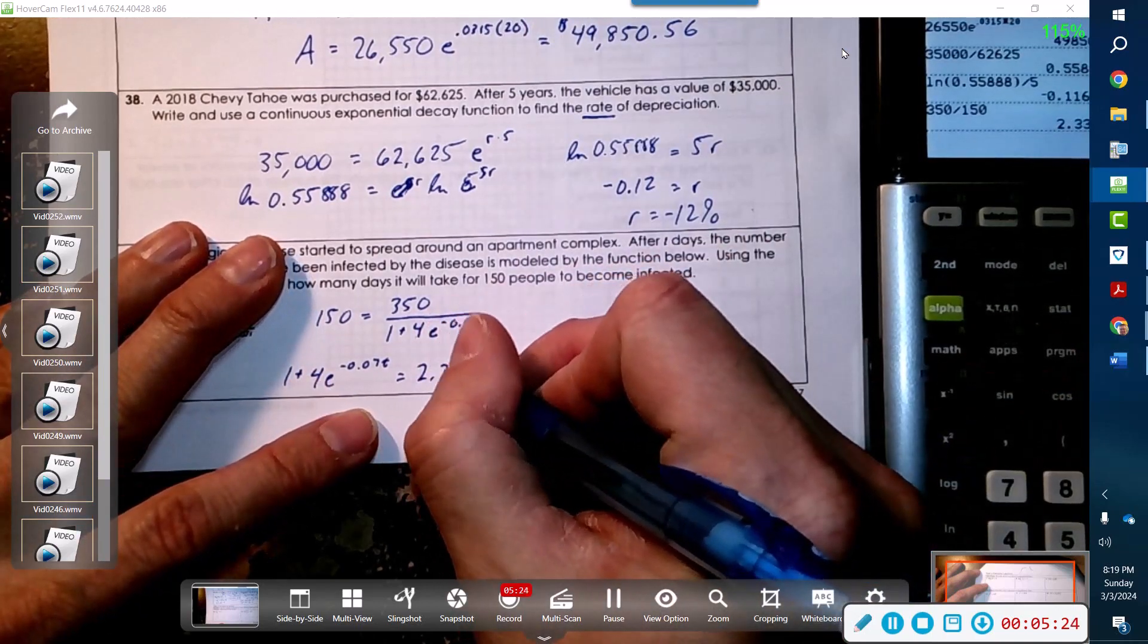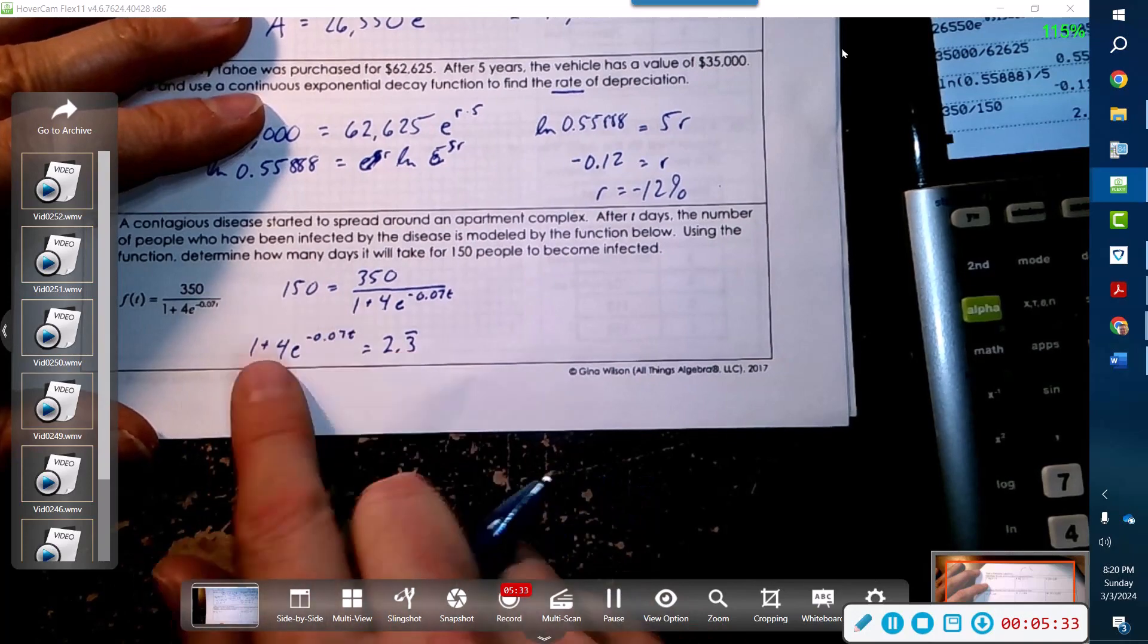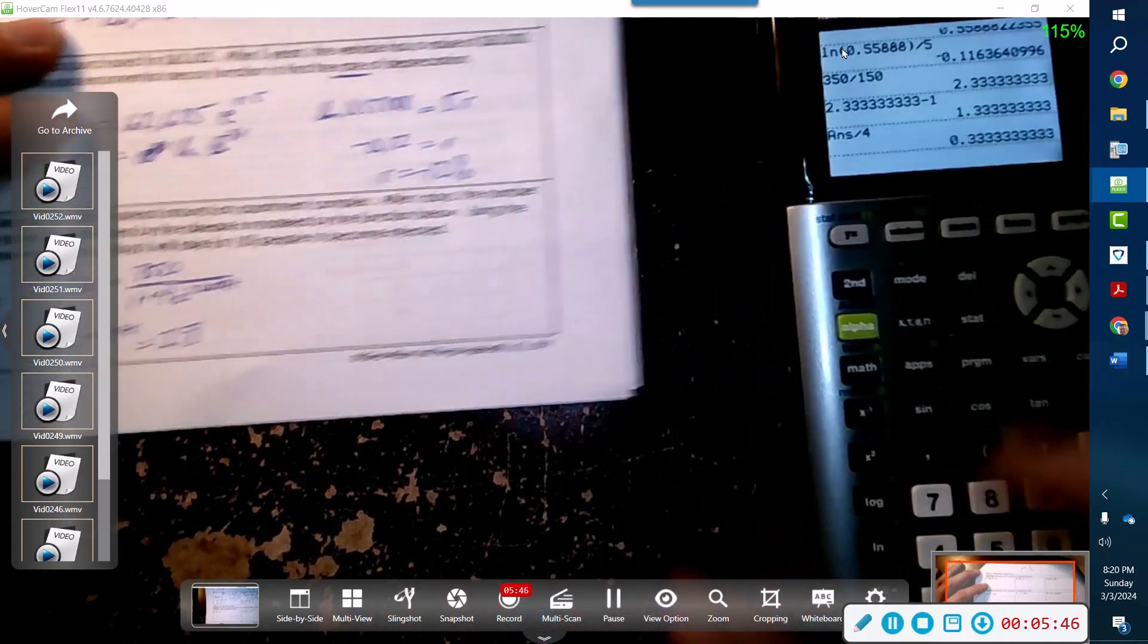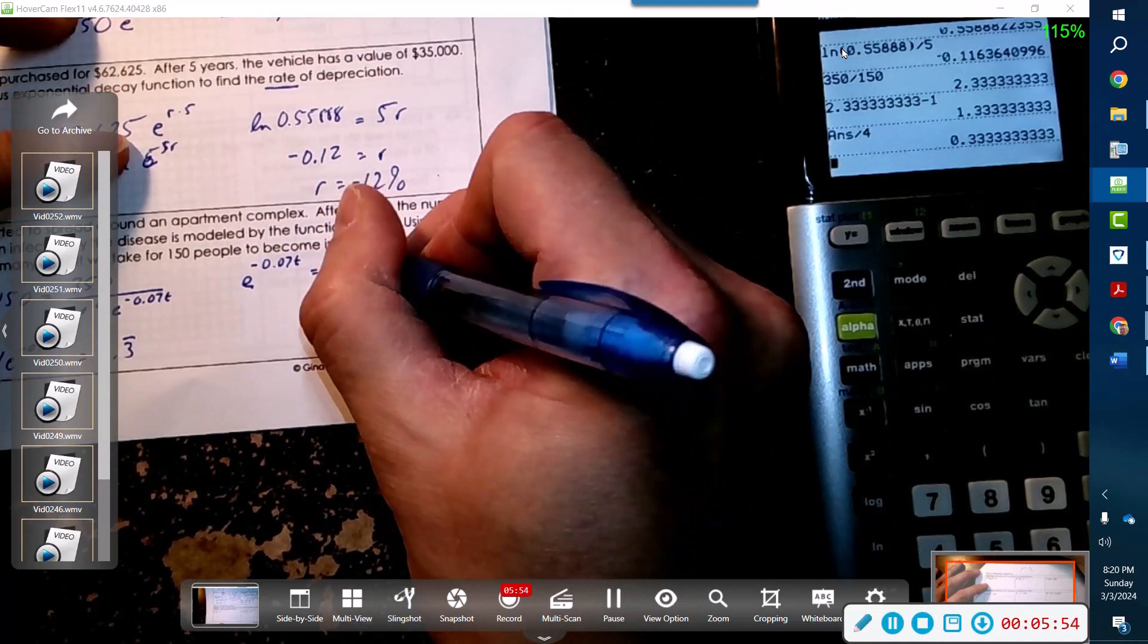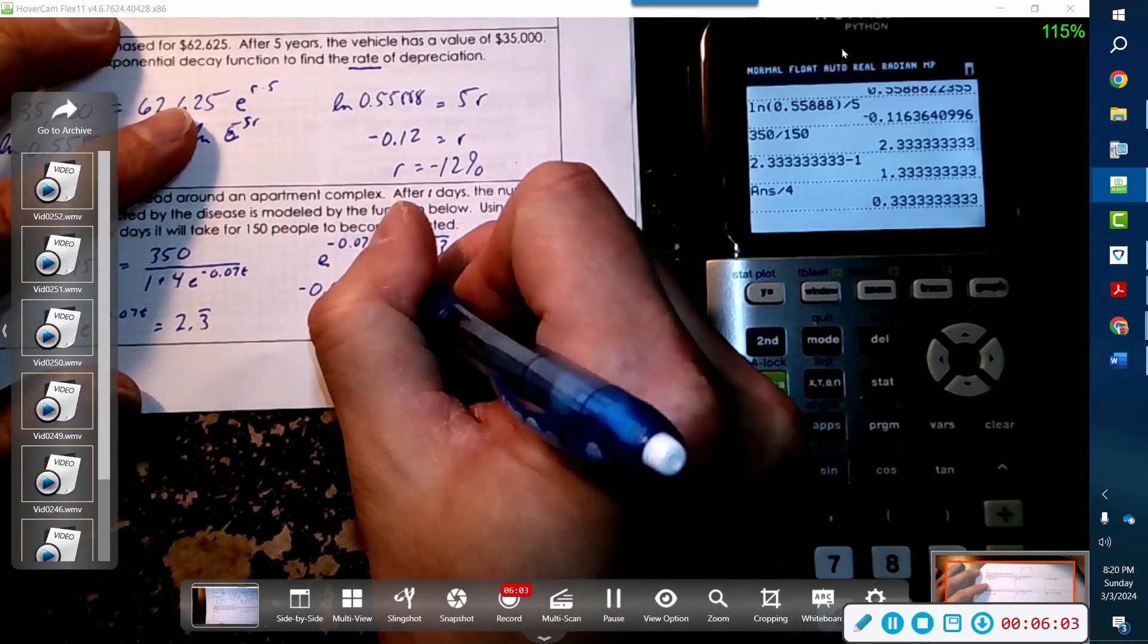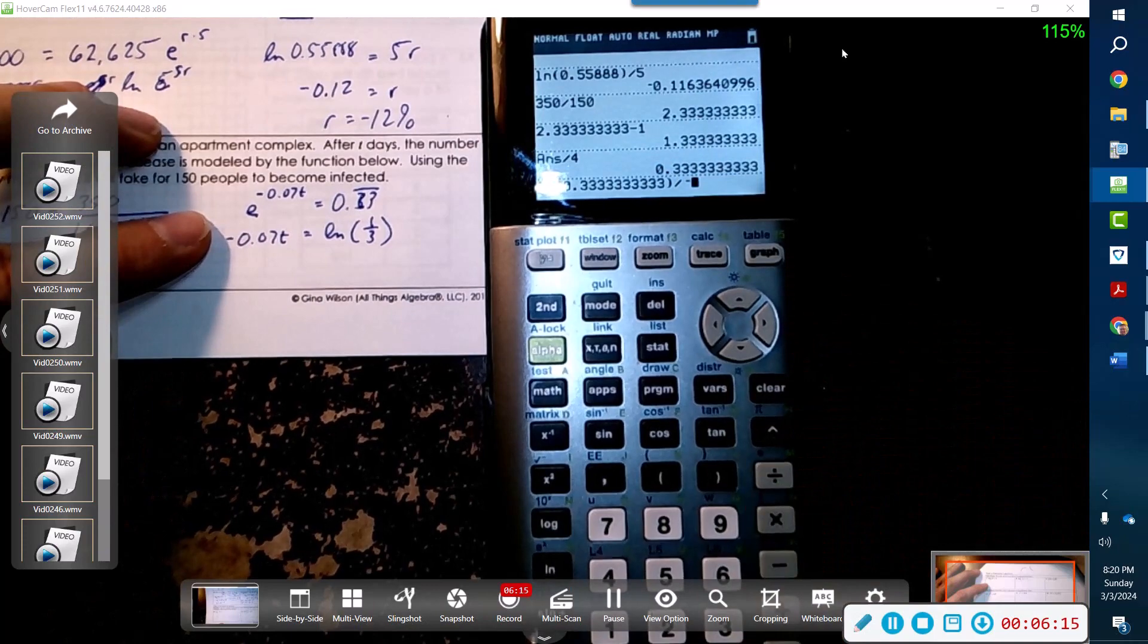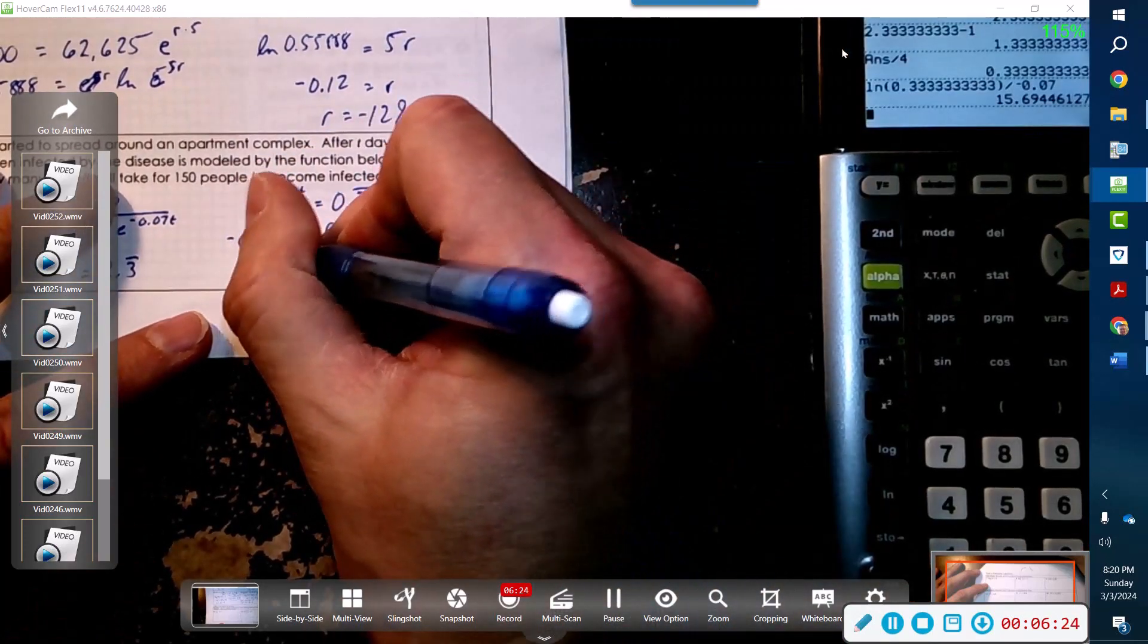350 divided by 150 is 2 and a third, so we'll go 2.3 repeating. We'll execute the next couple algebra steps - first subtract 1, then divide by 4. So e to the negative 0.07t equals that number, which equals a third. Now we take the ln of both sides. We'll take the ln of one third divided by negative 0.07 and get 15.7 days.